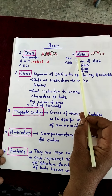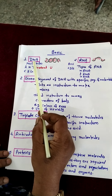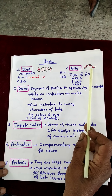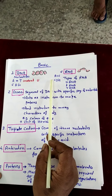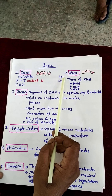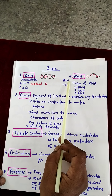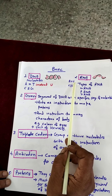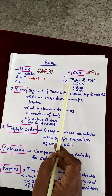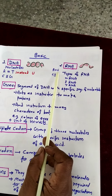RNA is ribonucleic acid and its structure is single-stranded. There is a difference between the structure of DNA and RNA. DNA is double-stranded and RNA is single-stranded. The nitrogenous bases are of four types in RNA also — adenine, but instead of thymine in RNA, the nitrogenous base is uracil. Therefore, adenine pairs with uracil. The other difference is that only instead of thymine in RNA, uracil is present.